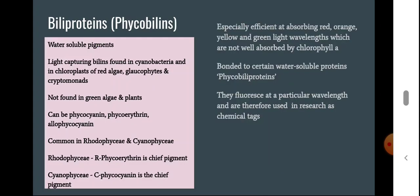The next category of pigments seen in algae is biliproteins, also known as phycobilins. These are water-soluble pigments and are light-capturing bilins — also known as bile pigments — found in cyanobacteria and in the chloroplasts of red algae, glaucophytes, and cryptomonads. They are predominant in cyanobacteria and red algae, and are not found in green algae and plants.